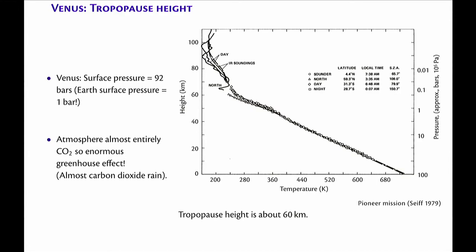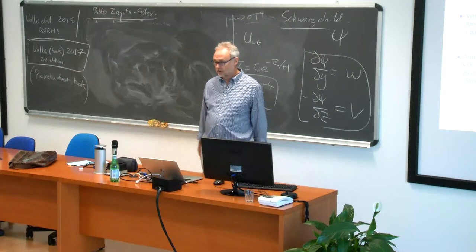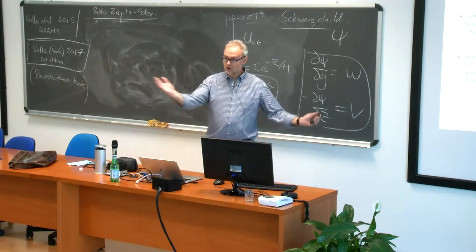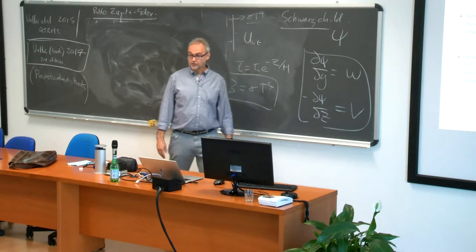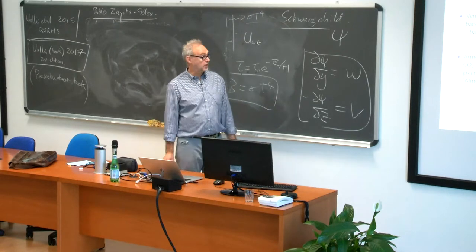There are sulfuric acid clouds — not nice rain clouds. Venus as a whole is of course in radiative equilibrium. The net incoming solar radiation on Venus is very similar to that of Earth: Venus is closer to the Sun, so it gets more gross incoming solar radiation, but it has quite a high albedo because it's covered in clouds. So it reflects more, and the net incoming solar is quite similar to that of Earth.